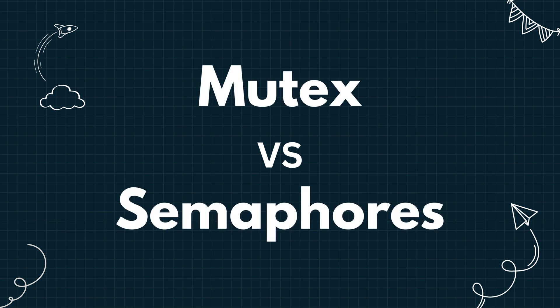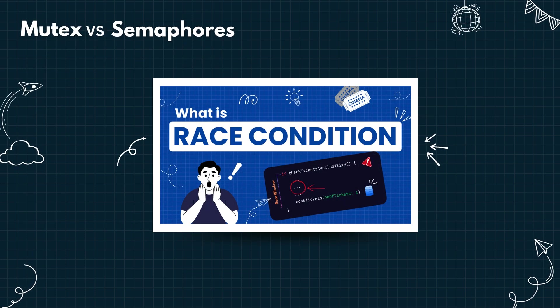Mutexes and semaphores. Both concepts are used in concurrent programming to prevent race conditions in the code. If you are not familiar with the concept of race conditions, please watch my video on race conditions before proceeding.